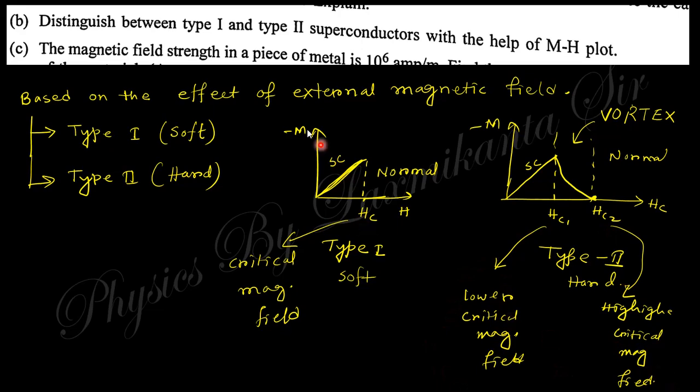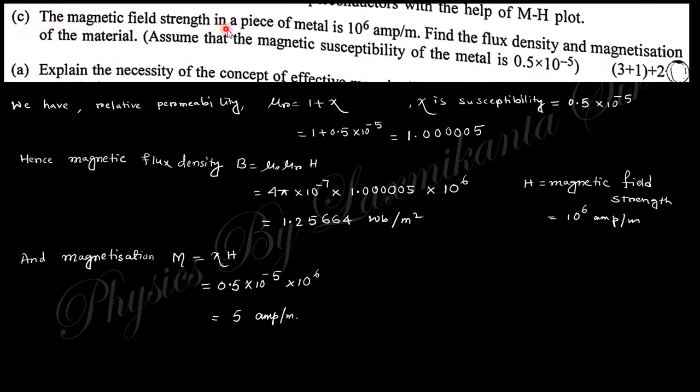Next question: the magnetic field strength H is given here as 10 to the power 6 ampere per meter. Find the flux density and magnetization. The susceptibility is given here. From the value of susceptibility, we obtain the relative permeability, which is 1 plus chi, and obtain this relative permeability. You can get the magnetic flux density: B equals mu naught times mu r times H. Mu naught is 4 pi times 10 to the power minus 7, mu r is given here, and H. Put the value and you will obtain this magnetic flux density. Magnetization M equals chi times H. Put the value of chi and H and you will obtain 5 ampere per meter.